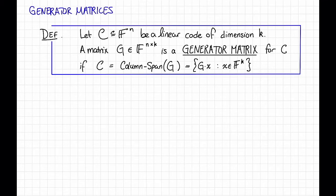So suppose that C is a linear code of dimension k, a subset of f to the n. We say that a matrix G in f to the n times k is a generator matrix for the code C if the code C is the column span of G. That is, the code C should be the set G times x, where x ranges over all possible messages x in f to the k.